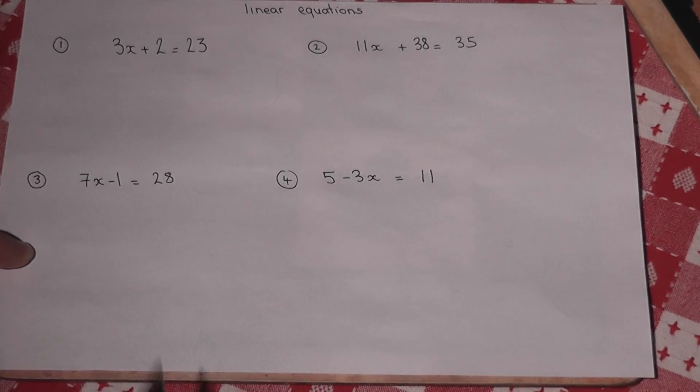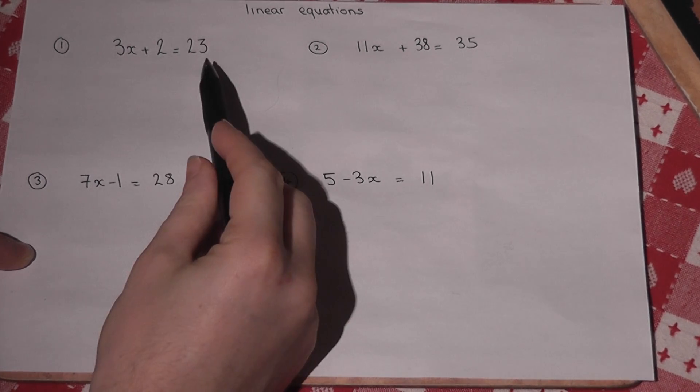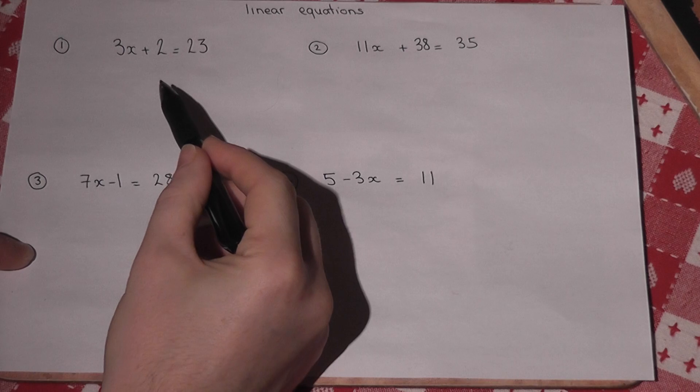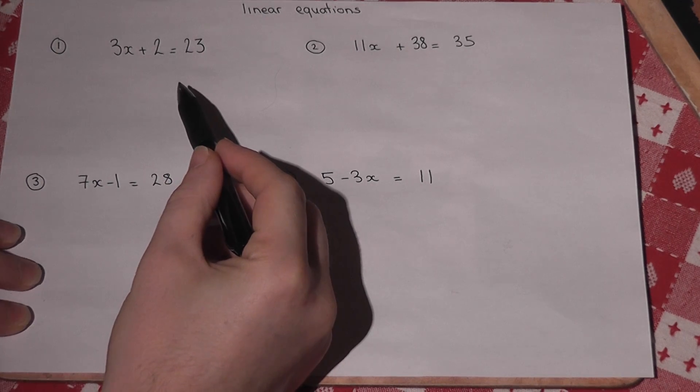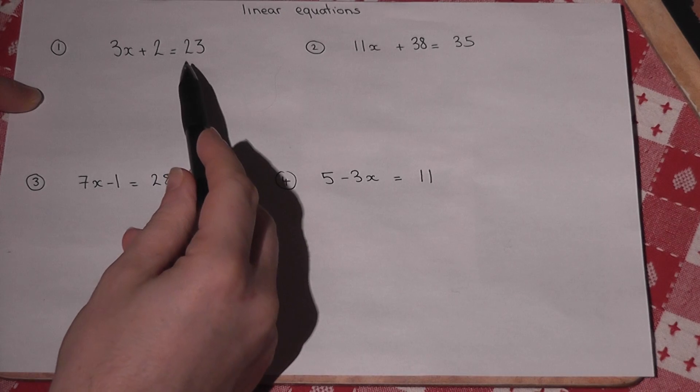The idea when solving linear equations is to gradually unravel the equation to end up with x equals at the end. So in the first example we have 3x plus 2 equals 23.